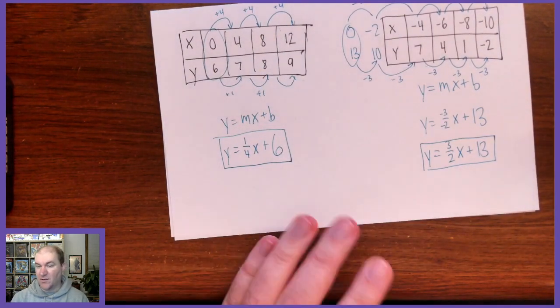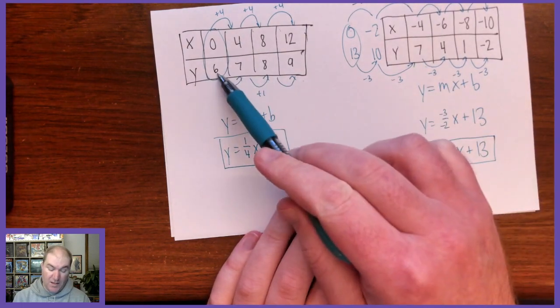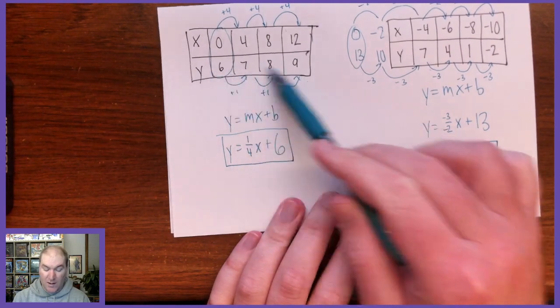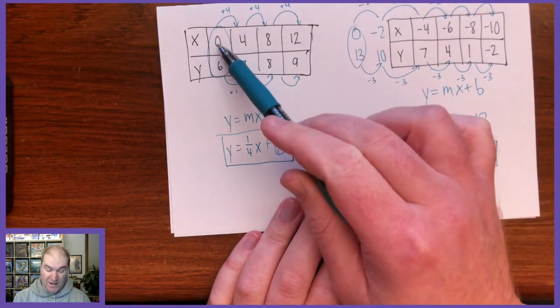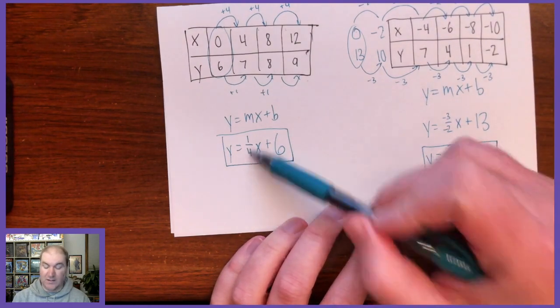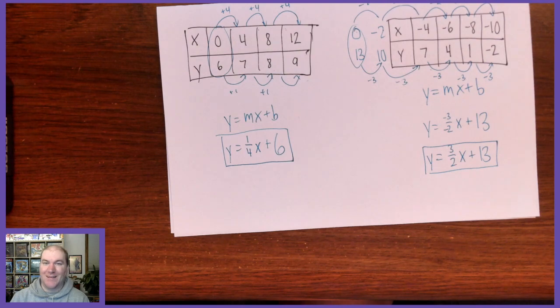And the other new thing that might happen is they might not always count by, the x might not always count by 1 like it's been doing all week. So make sure when you're finding the slope, it's the change. Each column is changing in the y's divided by how much each column is changing in the x's. And then don't forget to simplify that fraction if possible. That's all. Thanks for watching.